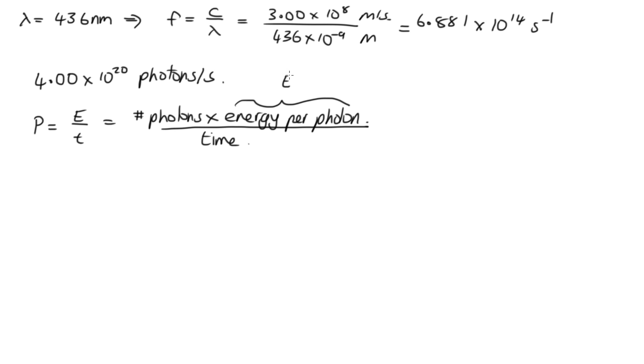And each photon has an energy equal to hf. So E is equal to 6.626 times 10 to the minus 34 times 6.881 times 10 to the 14. And this is equal to 4.559 times 10 to the minus 19.